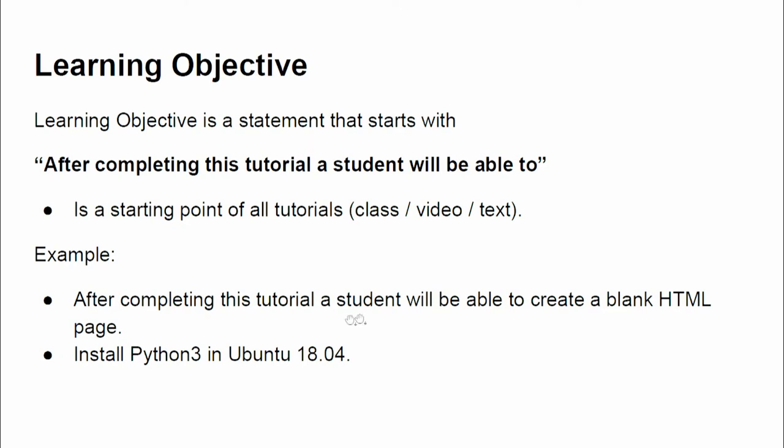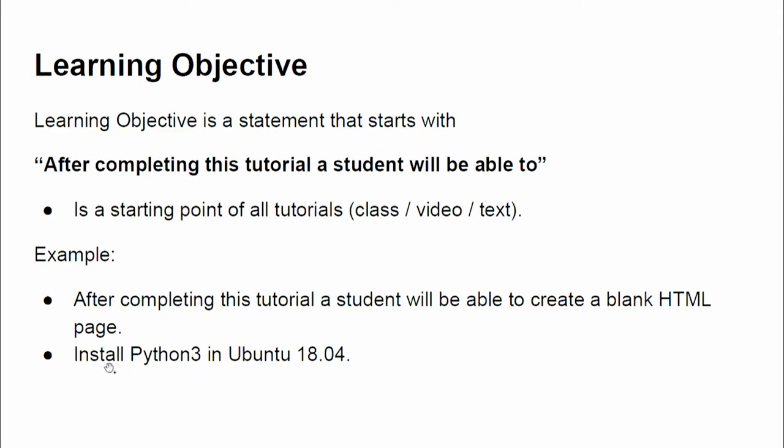So that's a learning objective. For example, 'After completing this tutorial, a student will be able to create a blank HTML page.' So if there is a video, a class, or a text manual, before that it is written that the learning objective of this tutorial is to teach you how to create a basic HTML page. Similarly, there can be a learning objective like: 'After completing this tutorial, a student will be able to install Python 3 in Ubuntu 18.04.'